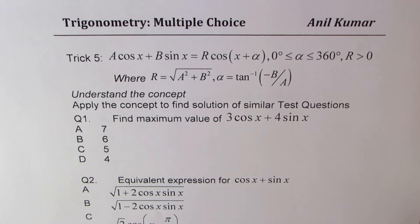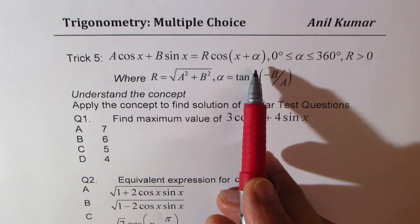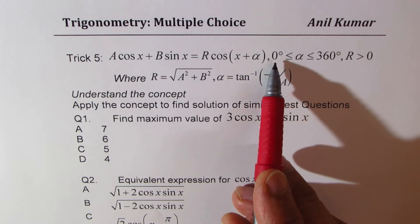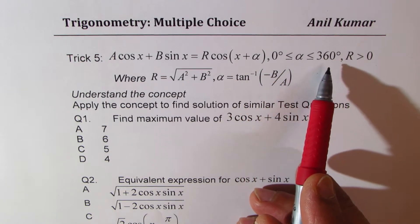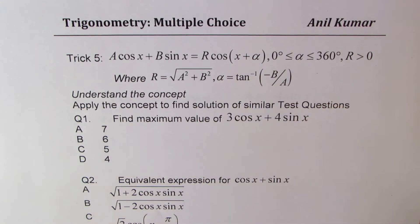This time I'm working with trick number 5: A cos x plus B sin x equals R cos(x plus alpha), where alpha is an angle between 0 to 360 degrees and R is greater than 0.